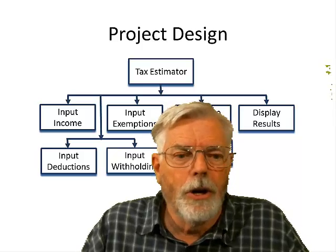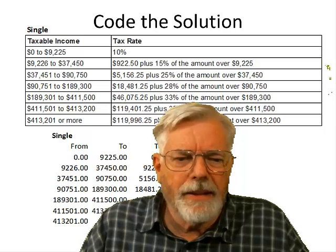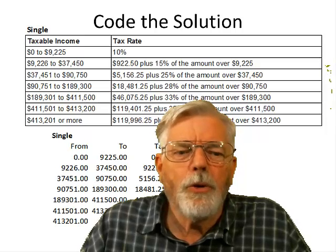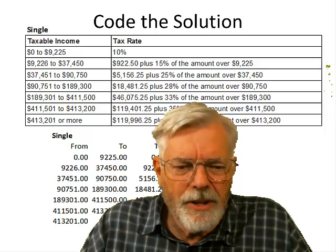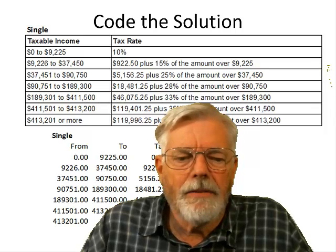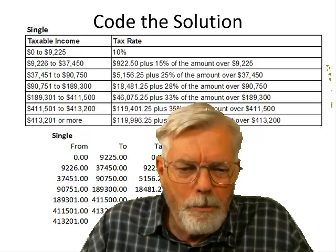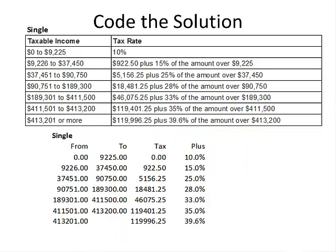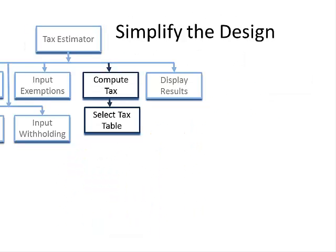Now it's time to figure out how to code the solution. Looking at one tax table, I want to put all this data into an array. I'm going to have a double-dimensioned array for the seven different tax brackets, with the from amount, the to amount, the base tax amount, and the percentage for anything over the from amount. To make things easier, I'll copy the to amounts over to the from, and the last entry will use the maximum possible double value. Since there are several different tax tables, a separate routine will go and look up the correct data.